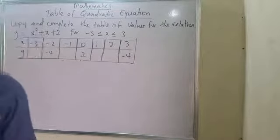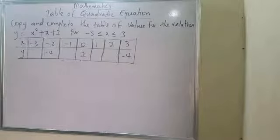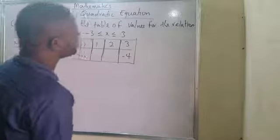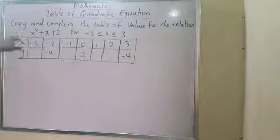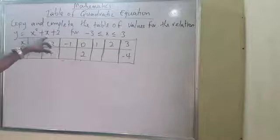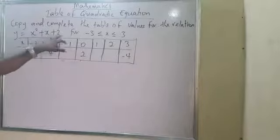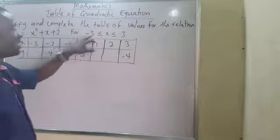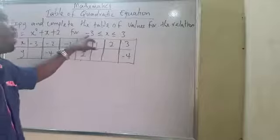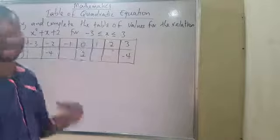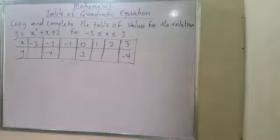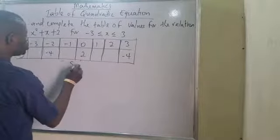You know, the question is given this way: copy and complete the table of values for the relation. This is the relation y relates with x, which is x² + x + 2 for this interval. This is -3 ≤ x ≤ 3. That's an inequality statement. And when I have something like this, how do I go?